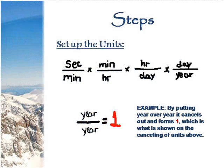The next step is setting up the units. By putting year over year, you will form one, which eventually cancels out the unit. So, looking at the example above, seconds over minutes times minutes over hours will cancel the unit of minutes. Then you will see that at the end, the unit that will be left is seconds over years. You will cancel out all the units and go to the next step.